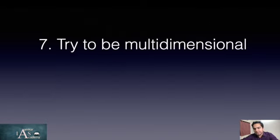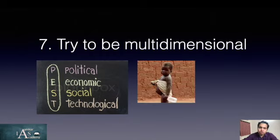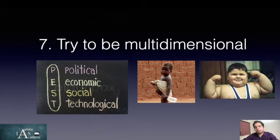You should be absolutely multi-dimensional and not keep writing on just one dimension. Cover the political aspect, social aspect, technological aspect, and economical aspect. For example, if the essay is on malnutrition, don't focus only on under-nutrition — don't forget that obesity is also a part of malnutrition.